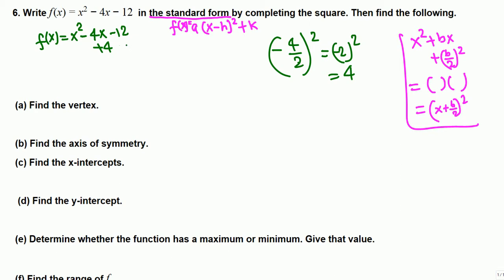To keep the equation balanced, we add 4 and subtract 4 on the same side — adding plus 4 minus 4 — so it equals the previous line. On the left we have f(x) plus 4; we move this 4 to the other side. We want to write just the three terms: x squared minus 4x plus 4 as a group, with negative 12 separate.